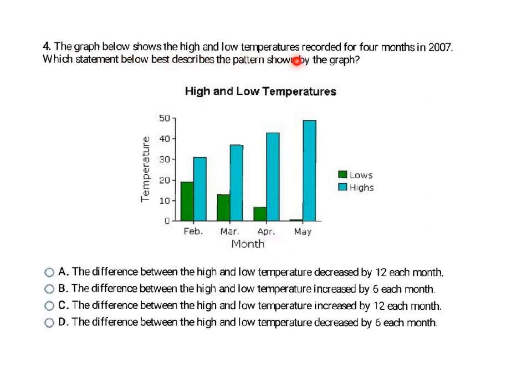The graph below shows the high and low temperatures recorded in four months in 2007. Which statement below best describes the pattern shown by the graph? So here they're looking at the pattern and you notice that each of these says difference between high and low temperatures, and some of them increased and some of them decreased by certain amounts. So if I'm looking at the difference between the high and the low temperatures they're getting further and further apart each month. The high temperature is getting higher and the low temperature is getting smaller. So that means the distance between them, the difference between them, is increasing every month. So I can go ahead and get rid of A and D choices because they say decreasing. So now I'm going to look at does it make more sense that each month they get 6 further apart or 12 further apart.